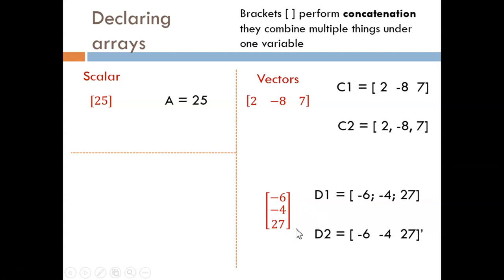We could also use the transpose operator. Without this little apostrophe, D2 would come out as a row vector. But because of the apostrophe, this gets flipped to be a column. More details on the next slide.